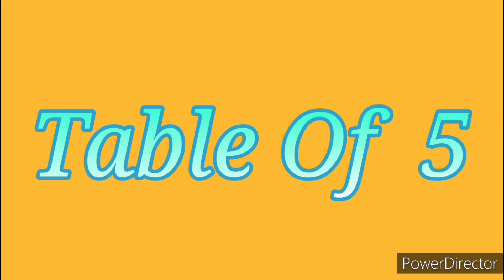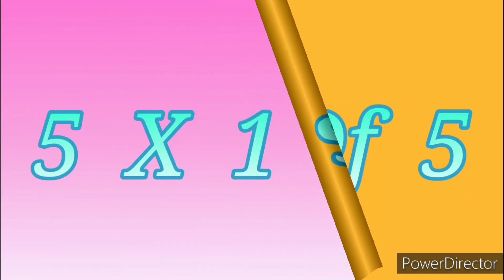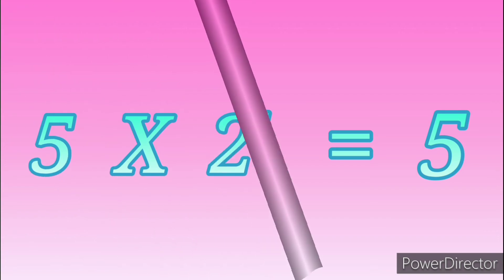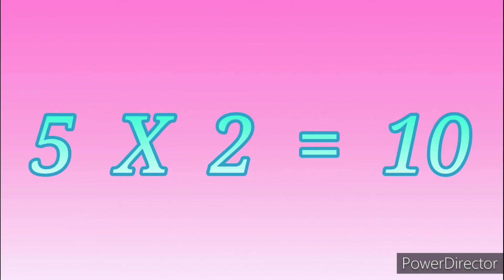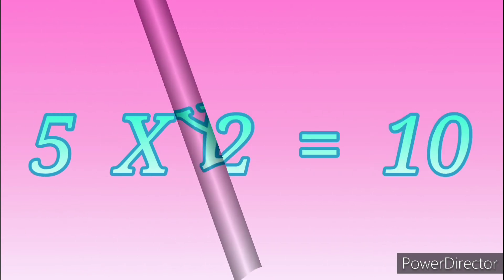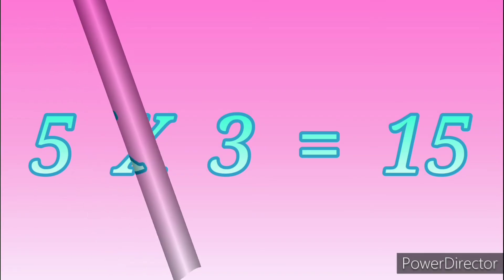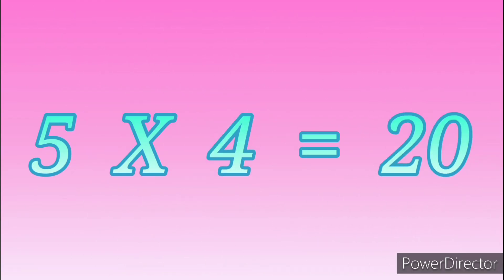Table of Five. 5 ones are 5. 5 twos are 10. 5 threes are 15. 5 fours are 20.